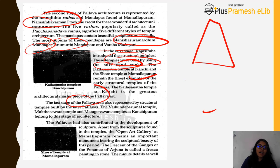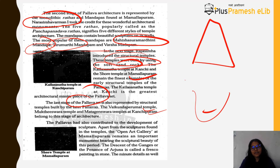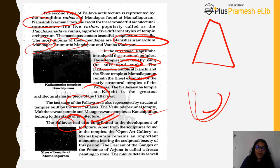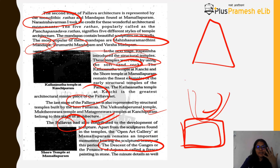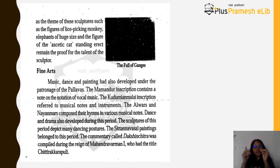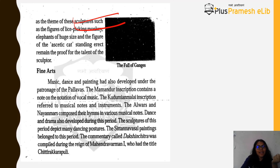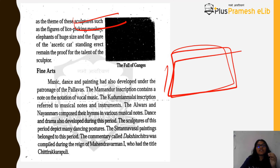The last stage of Pallava art also features structural temples: the Vaikunthaperumala temple, Muktesvara temple, and Magandesvara temple at Kanchipuram all belong to this architectural style. Pallavas also contributed to the development of sculpture. Apart from temple sculptures, they maintained an open-air art gallery at Mahabalipuram where great sculptures were made — for example, the Descent of the Ganges (Ganga Avataran) and Arjuna's Penance. These are essentially fresco-like paintings done in stone, with extremely minute and beautiful details. The themes of sculptures included lice-picking monkeys, huge elephants, a static cat, and many other naturalistic subjects.